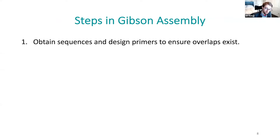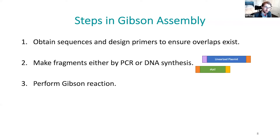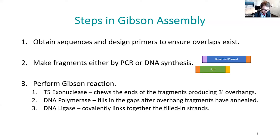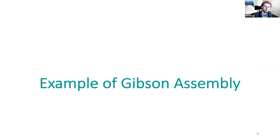The overall process of Gibson assembly: first, you identify your sequences and design primers to ensure you get the overlap. Then you make the fragments by PCR or DNA synthesis. Once you have those fragments, you perform the Gibson reaction. This one-pot reaction has three enzymes: a T5 exonuclease that chews back the ends of your fragments, a DNA polymerase that fills in the gaps after those chewed-back pieces begin to anneal together, and a DNA ligase that glues it all together to give you a covalently linked strand.